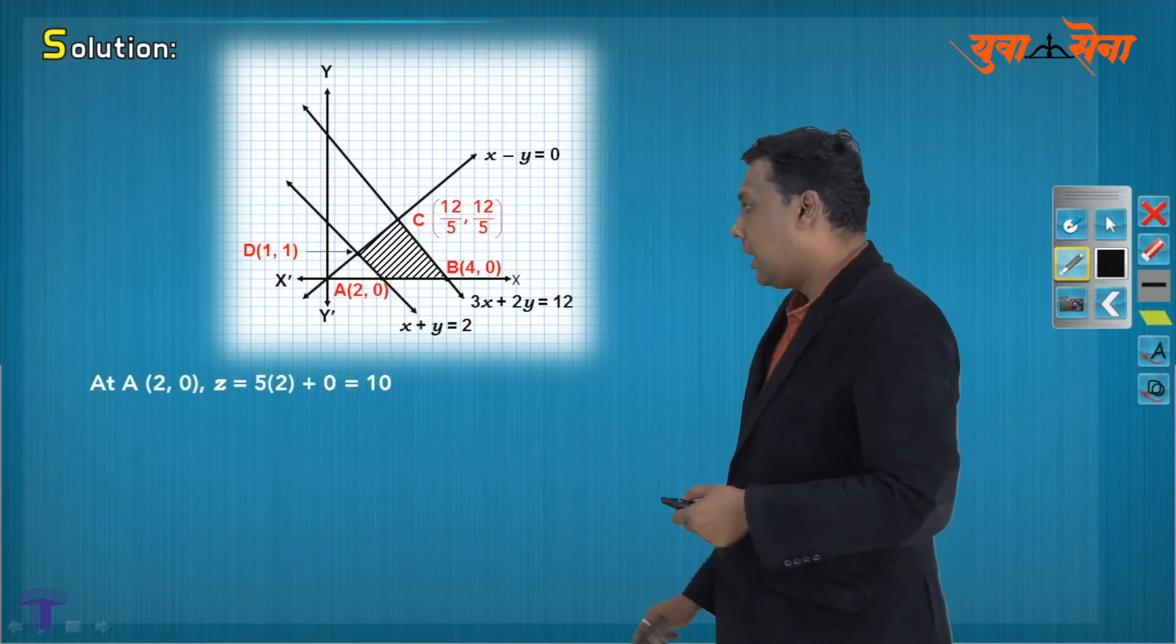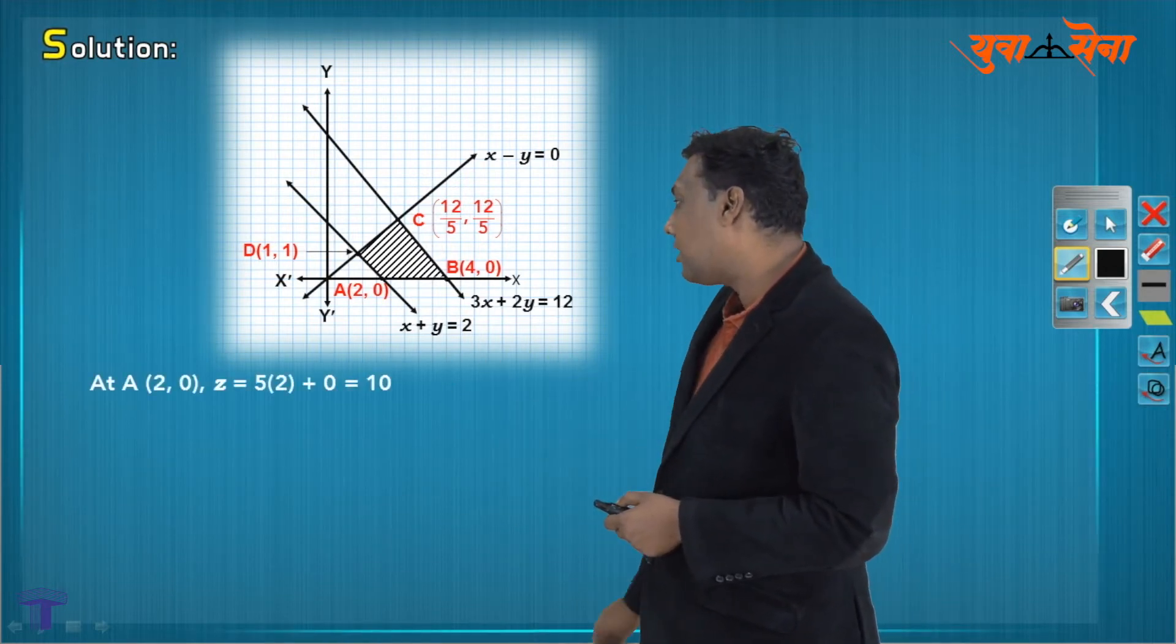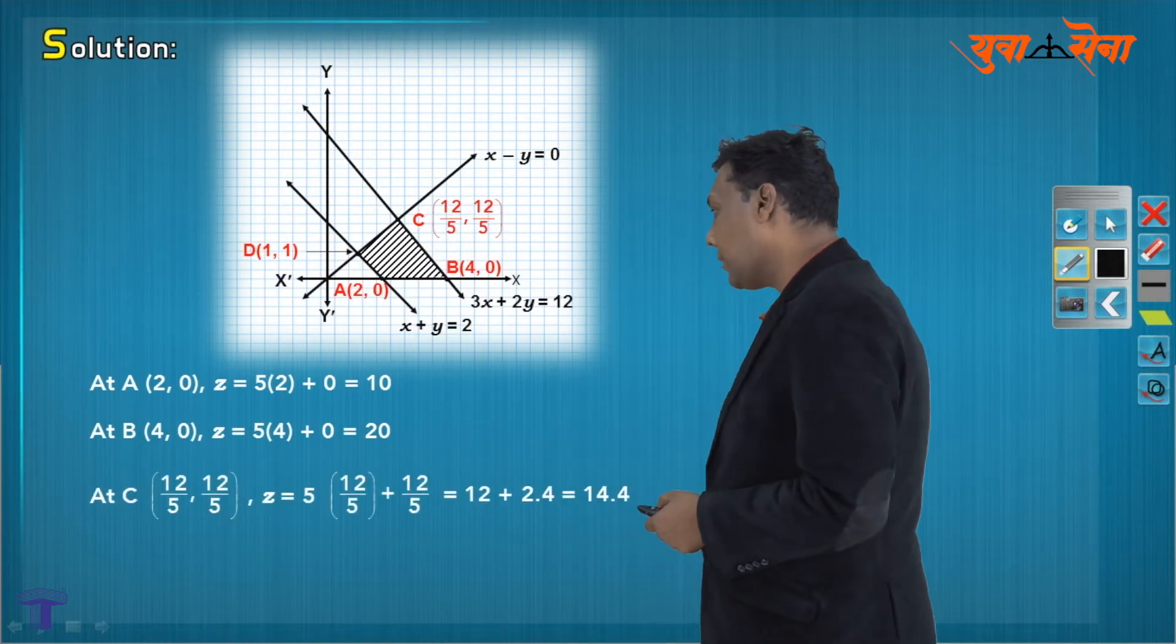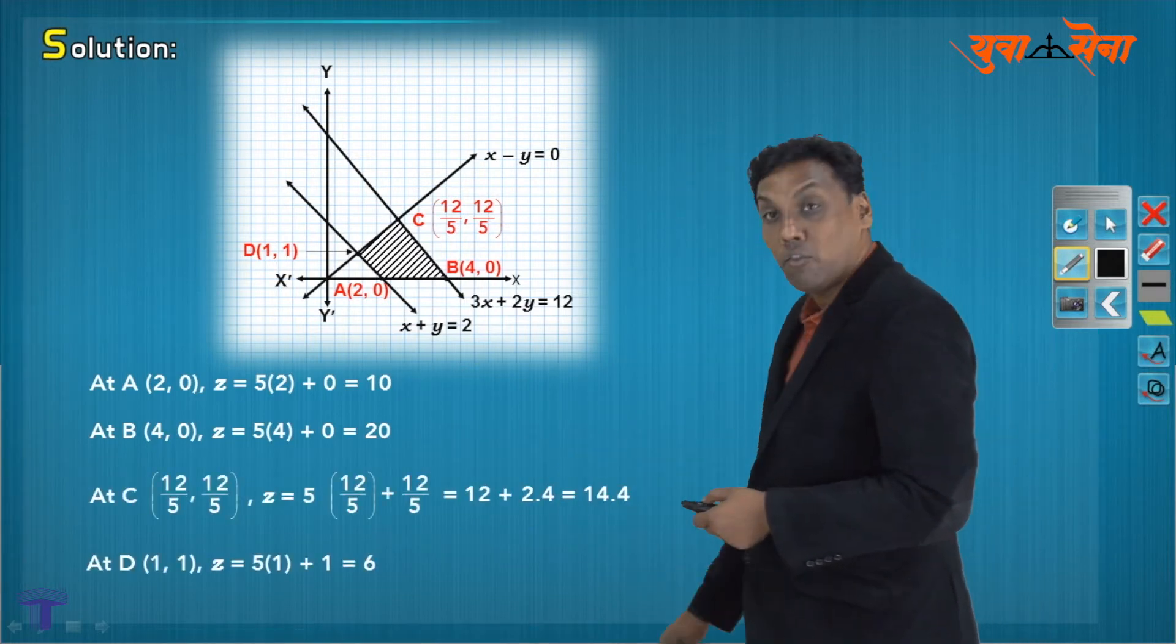We will get the answer at every vertex. At the third vertex 2, 0, we get the answer as 10. Second vertex, we get the answer as 20. Third vertex, we are 14.4, and the last vertex we have 4, 0.